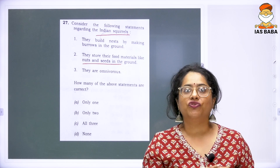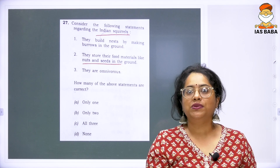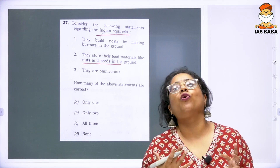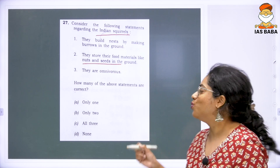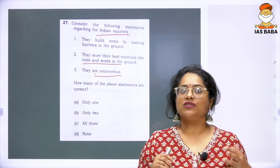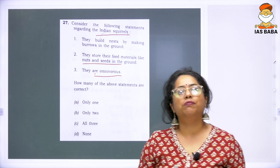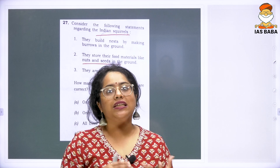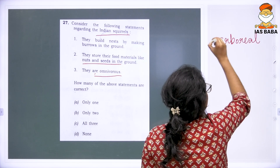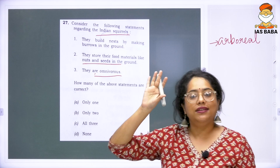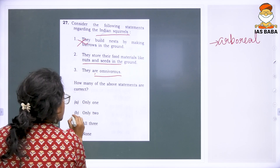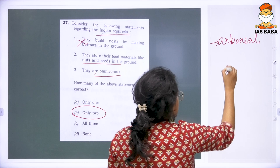Most people see squirrels eating nuts and fruits, but squirrels do have an omnivorous nature — some species do consume certain insects and smaller organisms. So the third statement is also correct. However, the first statement — that they build nests by making burrows in the ground — is incorrect. Indian squirrels are primarily arboreal in nature and have their homes up in trees. So the answer is only two statements are correct — option B.